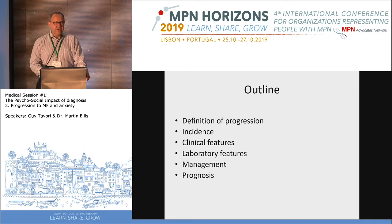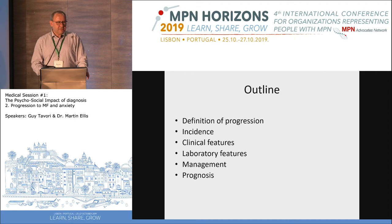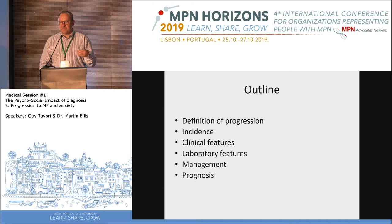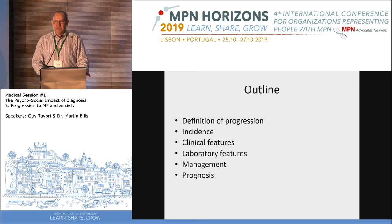A very brief outline: we will define what is meant by progression. Sometimes this is unclear, sometimes there's a continuum, and progression isn't necessarily linear — it can sometimes be circular. We'll cover the incidence of progression, the clinical and laboratory features, how we manage patients who progress from ET or PV to myelofibrosis, and how prognosis might be affected by progression.